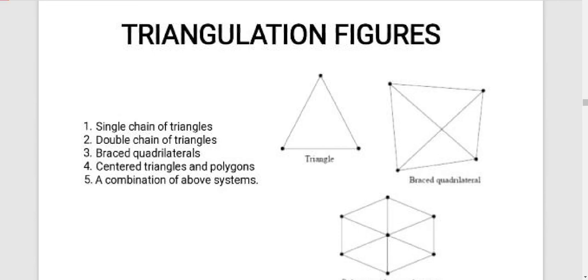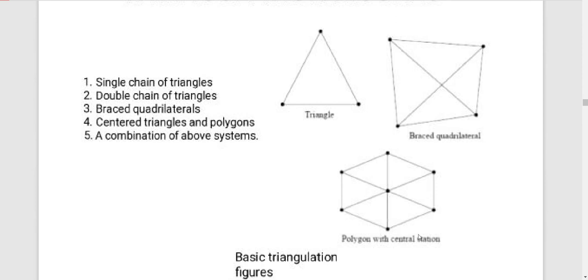If you use the figures, you can use the details. We use the triangle. This is the braced quadrilateral. This is the polygon with the center. This is the stop station and the main station — this can join the other station.